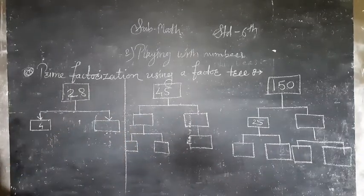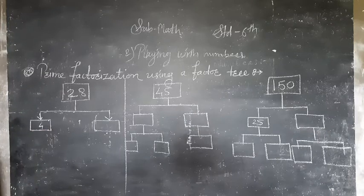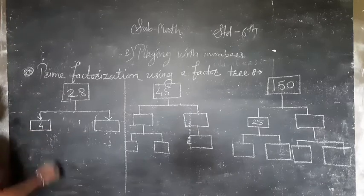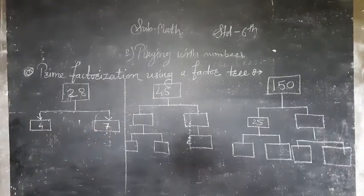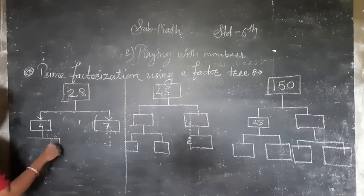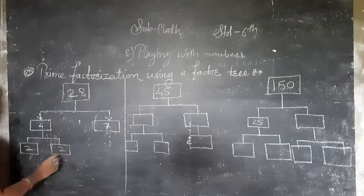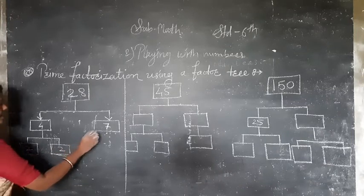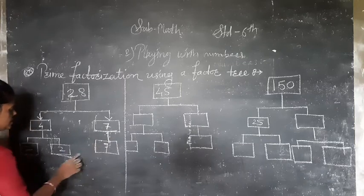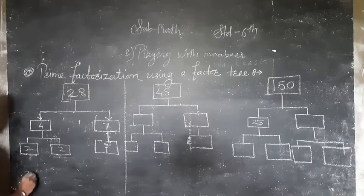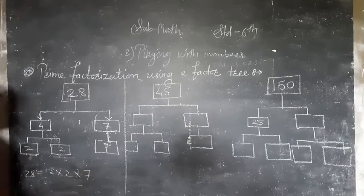Now we are going to start from the first one, 28. So here I will take 4 times 7 equals 28. Then 4 becomes 2 times 2. We stop at 2 because it is a prime number which doesn't have any further factors. So the prime factorization can be represented as 2 times 2 times 7.